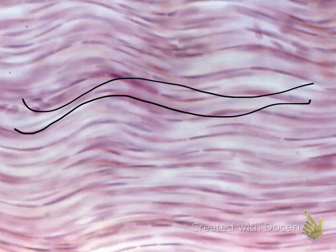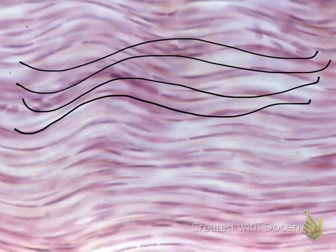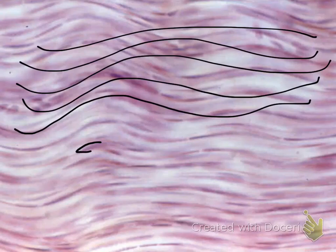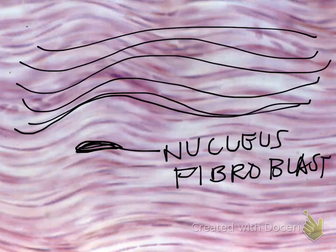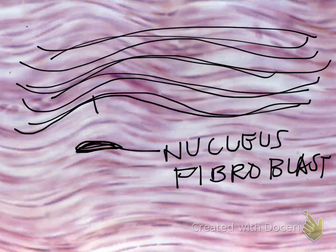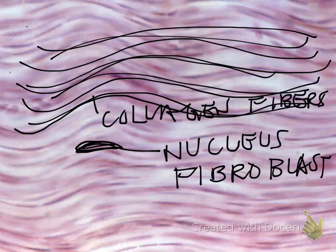In this tissue, you notice that you cannot really see any cells at all. All you see is thick layers of collagen fibers running through it, and they are pretty much all parallel. In these tiny spaces are the nuclei of some cells — the fibroblasts. Fibroblasts are the actual cells that make the fibers. These dark, thick fibers are your collagen fibers. When all you see is collagen fibers and the nuclei of the fibroblasts, then you are looking at dense connective tissue.